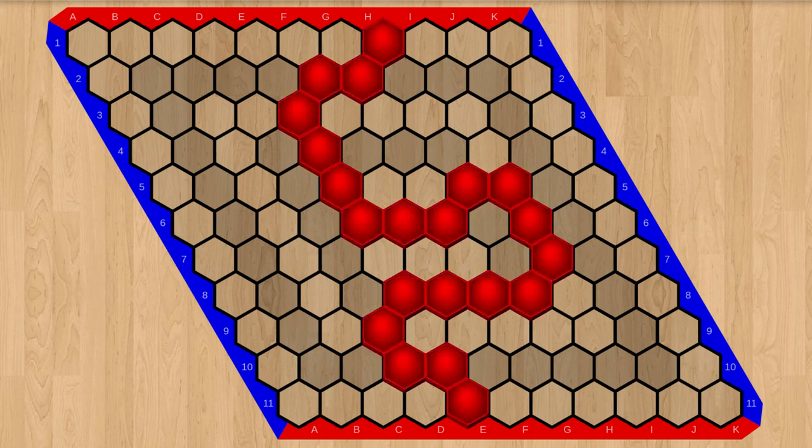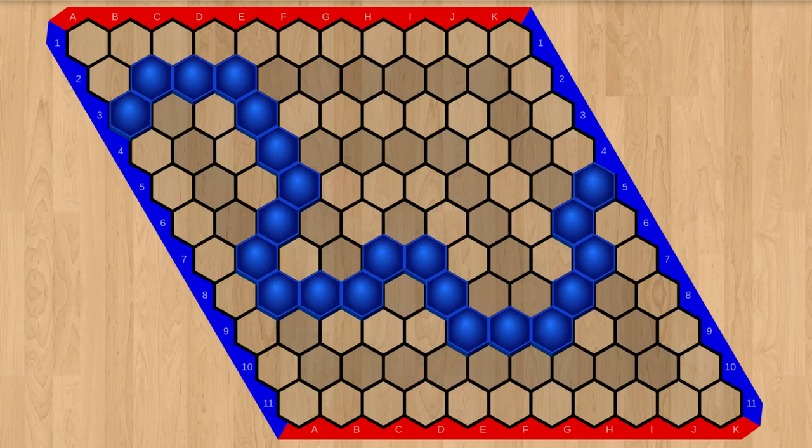The goal is to connect two opposite sides of the board by stones of the same color. One player tries to connect the top edge to the bottom edge with red stones. The other player tries to connect the left edge to the right edge with blue stones.